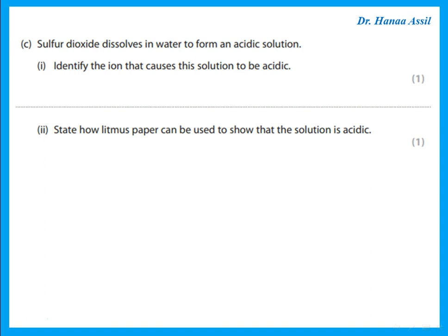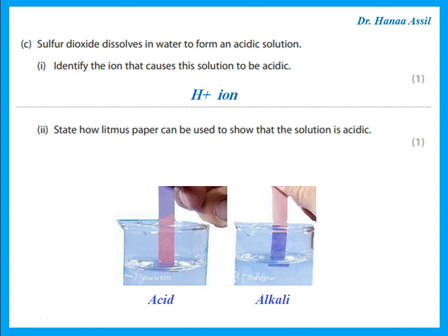Sulfur dioxide dissolves in water to form an acidic solution. Identify the ion that causes this solution to be acidic — it is the H⁺ ion. If he were to ask which ion causes a solution to be alkaline, it is the OH⁻ or hydroxide ion. State how litmus paper can be used to show that the solution is acidic — for acids, the blue litmus paper turns red. If I have an alkali or a base, the red litmus paper turns to blue.